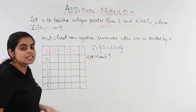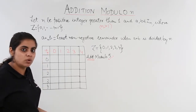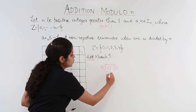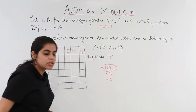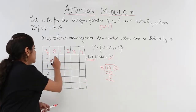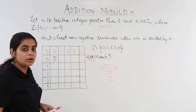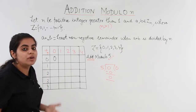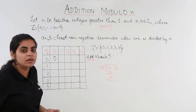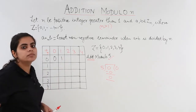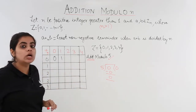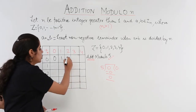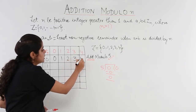Let's see how to do it. 0 plus 0 is 0. 0 divided by 5 gives remainder 0, so we write 0 here. 0 plus 1 is 1; 1 divided by 5 gives remainder 1. 0 plus 2 is 2; 2 divided by 5 gives remainder 2. Similarly for 3 and 4. Now let's come to the next row of 1.